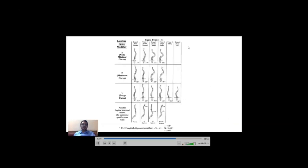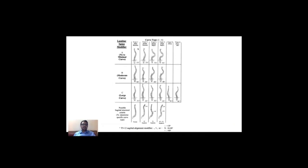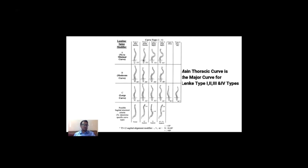There are six curve types described by Lenke. Type 1 is main thoracic — only the main thoracic curve is structural, adjacent proximal thoracic, thoracolumbar, and lumbar curves are non-structural. Type 2 is double thoracic — both proximal thoracic and main thoracic are structural, while thoracolumbar and lumbar are non-structural. Type 3 is double major — proximal thoracic is non-structural, but main thoracic and thoracolumbar curves are structural. Type 4 is triple major — proximal thoracic, main thoracic, and thoracolumbar lumbar curves are all structural.